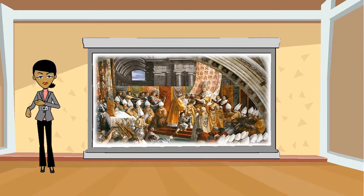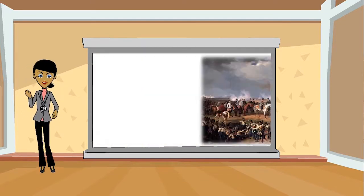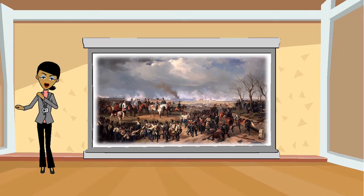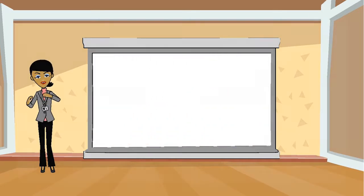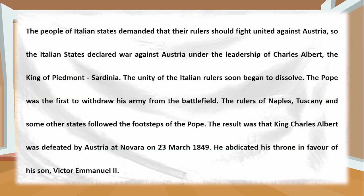The unity of the Italian rulers soon began to dissolve. The Pope was the first to withdraw his army from the battlefield. The rulers of Naples, Tuscany, and some other states followed the footsteps of the Pope. As a result, King Charles Albert was defeated by Austria at Novara on 23rd March 1849. He abdicated his throne in favor of his son Victor Emmanuel II.